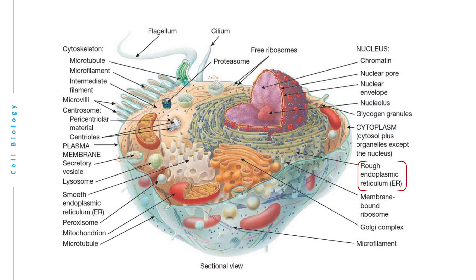If you look at the cell again, rough endoplasmic reticulum is found around the nucleus. The ribosomes are bound to it. You have free ribosomes floating in the cytoplasm as well, and then you have the smooth endoplasmic reticulum, which is further away.